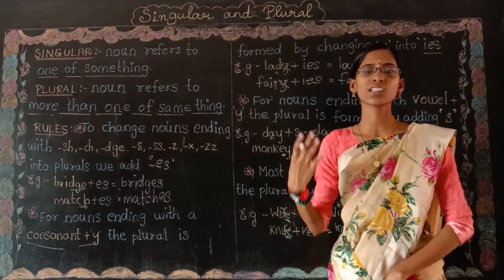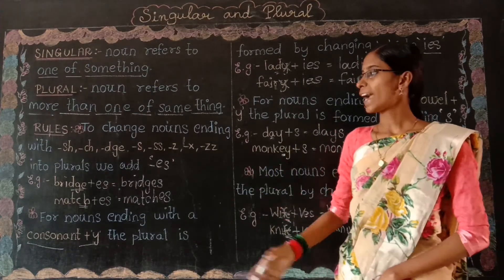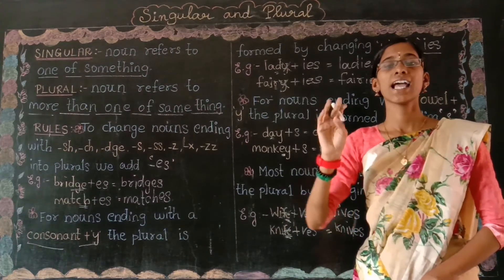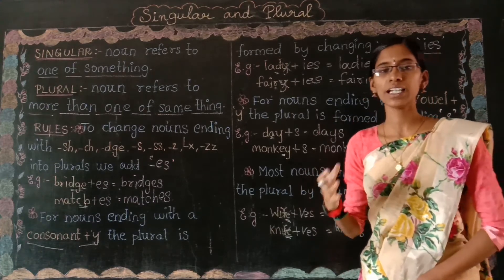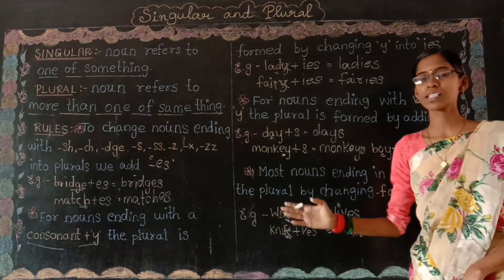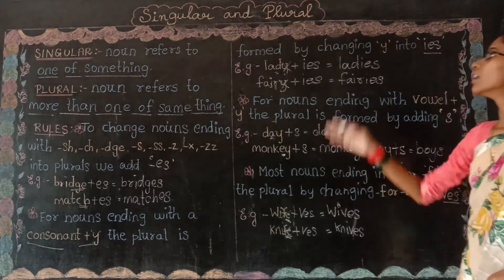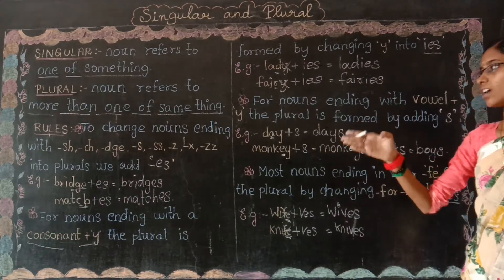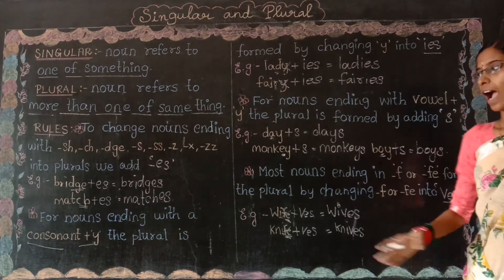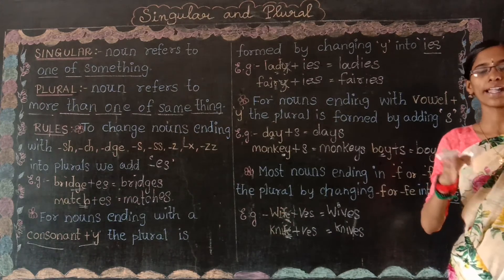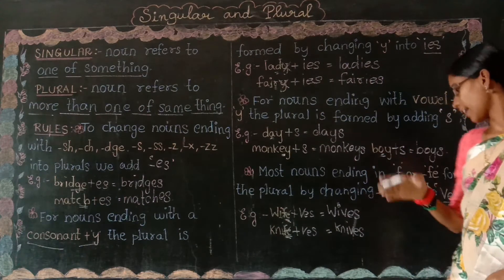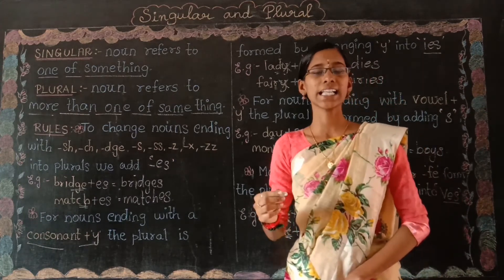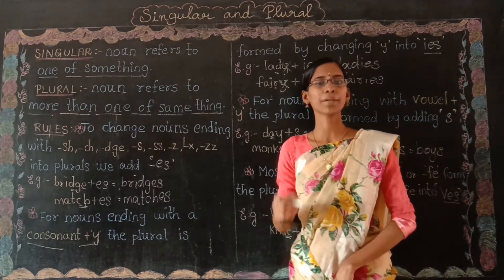So in this session we have learnt the definition of singular and plural, and the four rules for changing a singular noun into a plural noun. Rule one: nouns ending with SH, CH, DGE, S, SS, X, or Z — add ES. Rule two: nouns ending with consonant plus Y — change Y into IES. Rule three: nouns ending with vowel plus Y — add S. Rule four: nouns ending in F or FE — change to VES. I hope this lesson is clear. In our next session we will learn another interesting topic. Be safe and be happy always. Thank you for watching.